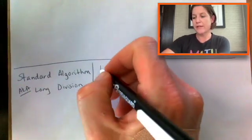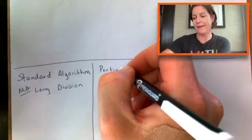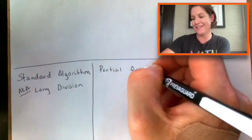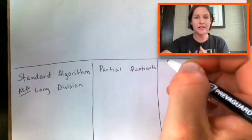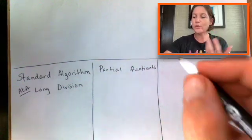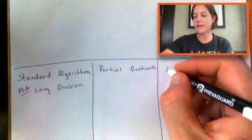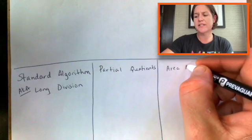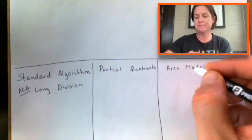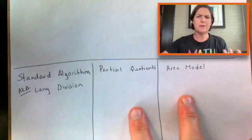But now we have other ways and they are not bad, y'all. They're not bad ways. It's just a different journey to take to get there. And the cool thing is something called the partial quotients and the area model, which is very similar to the partial quotients you'll see. The thing about these two is that they're based on place value.